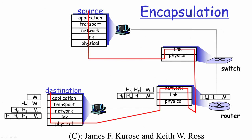This is what we refer to as encapsulation and decapsulation. Through this process, a network packet originating from an application on the source machine traverses the entire IP protocol stack on the source machine, passes through different devices on the network, reaches the final destination, and then traverses up the IP protocol stack on the destination machine to finally reach the application running there.